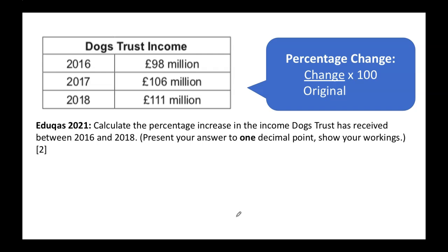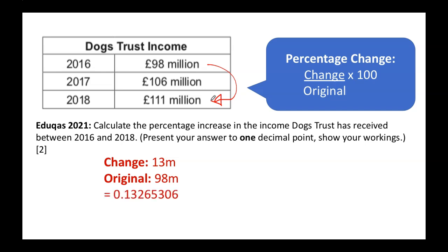Finally, this question on percentage change is really common and a little more complicated. It's a past paper question about a charity and their income from 2016 to 2018. The formula is: change over original, multiplied by 100. The change between the two years is 13 million, and the original is 98 million. Do change over original to get a decimal, then multiply by 100. Give it to one decimal place and include the percentage sign.